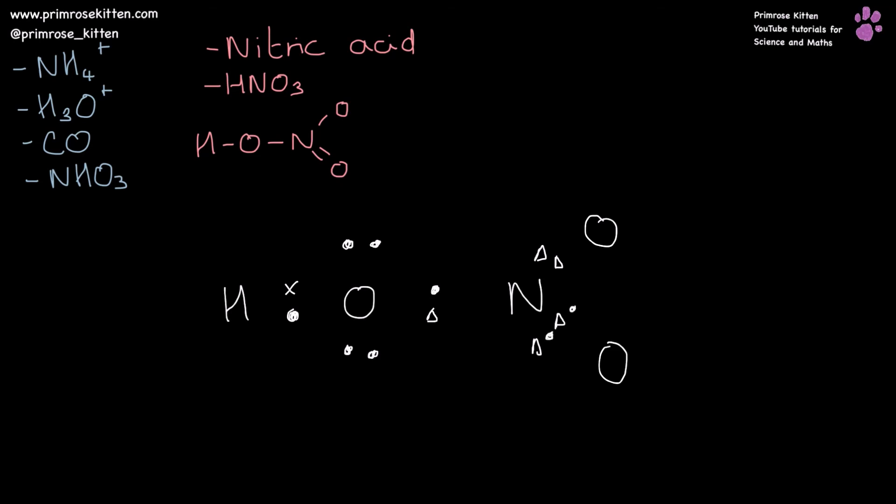Now this oxygen down here, double bonds, we need four electrons in total. Oxygen has six electrons, but it wants eight. Now it has eight. Oxygen, this one over here, has six electrons, but it wants eight. So it's just going to tag on to these two spare electrons from the nitrogen. And that there is going to be our dative bond.